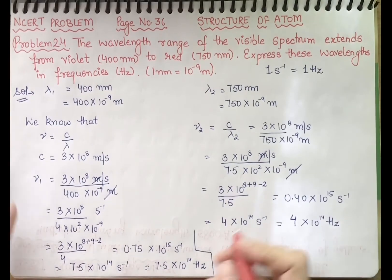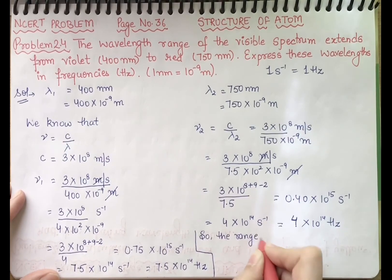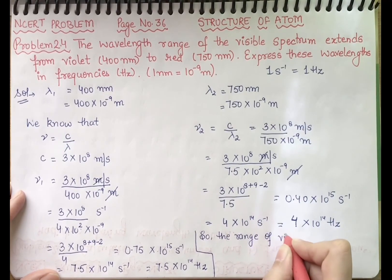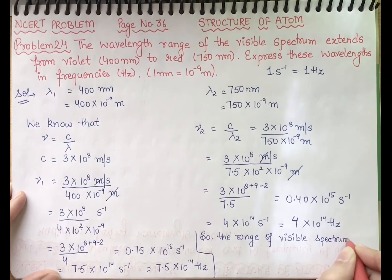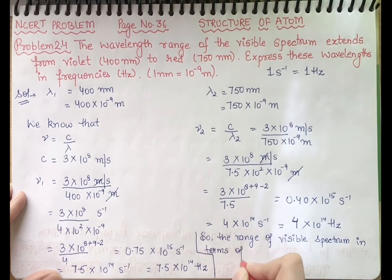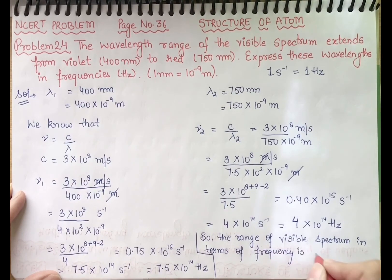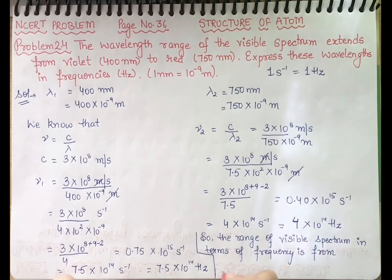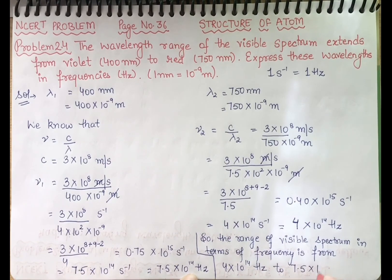So the range of the visible spectrum in frequency is from 4 into 10 raised to power 14 hertz to 7.5 into 10 raised to power 14 hertz.